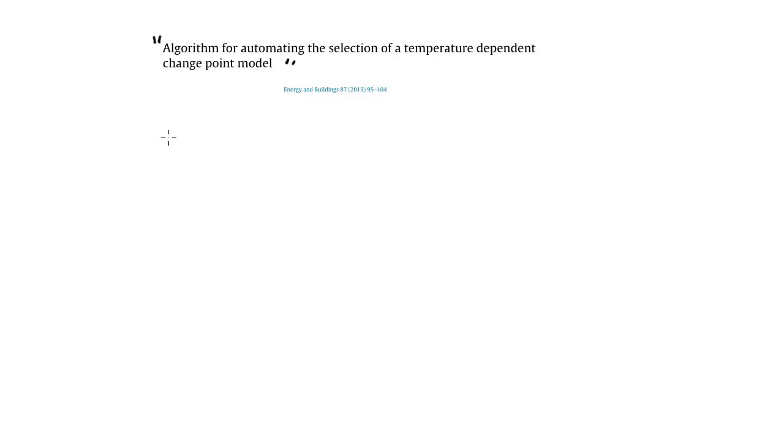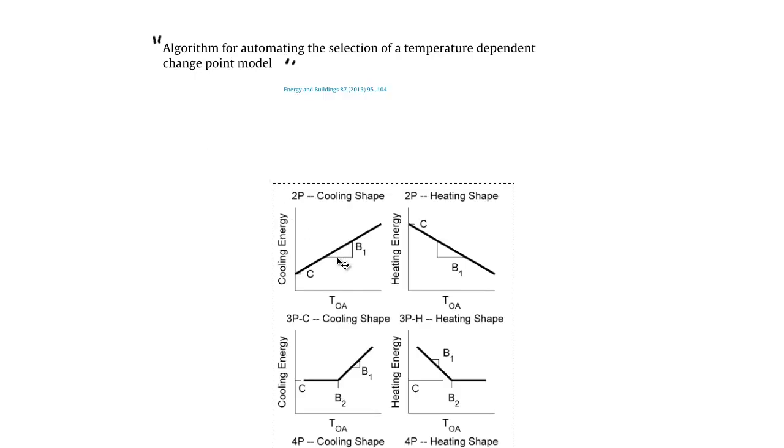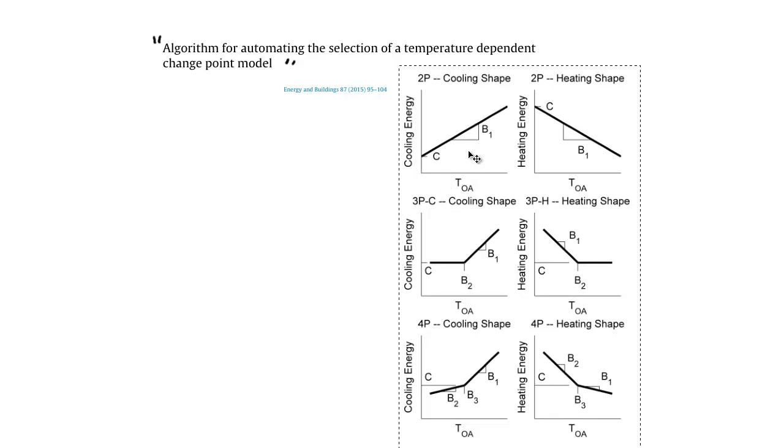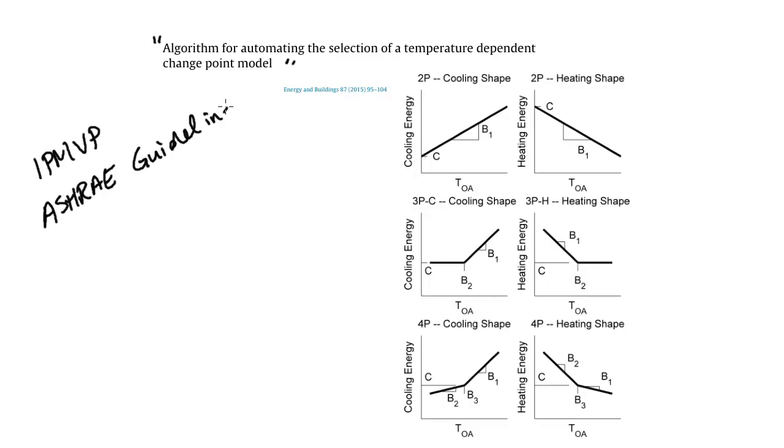The first thing to understand is that we were looking at linear change point regression models for predicting whole building energy use. When it comes to monitoring and verification for the determination of savings, these are very popular types of models. In fact, the IP MVP and ASHRAE Guideline 14, which are both related to measurement and verification of energy and water savings, they approve of these for the determination of savings.